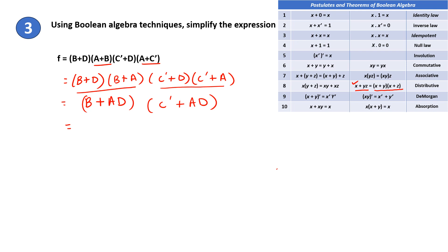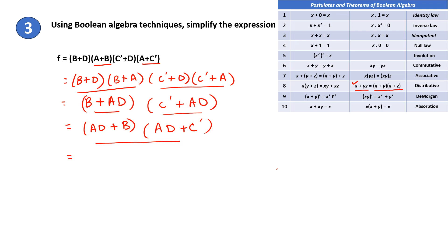Now apply the commutative law to this. So this will be AD plus B. Again apply the commutative law here, so this becomes AD plus C'. Next apply the distributive law to these two. Here AD will be X, B will be Y, and C' will be Z. So this can be simplified and written as AD plus BC'. So this is the simplified expression.